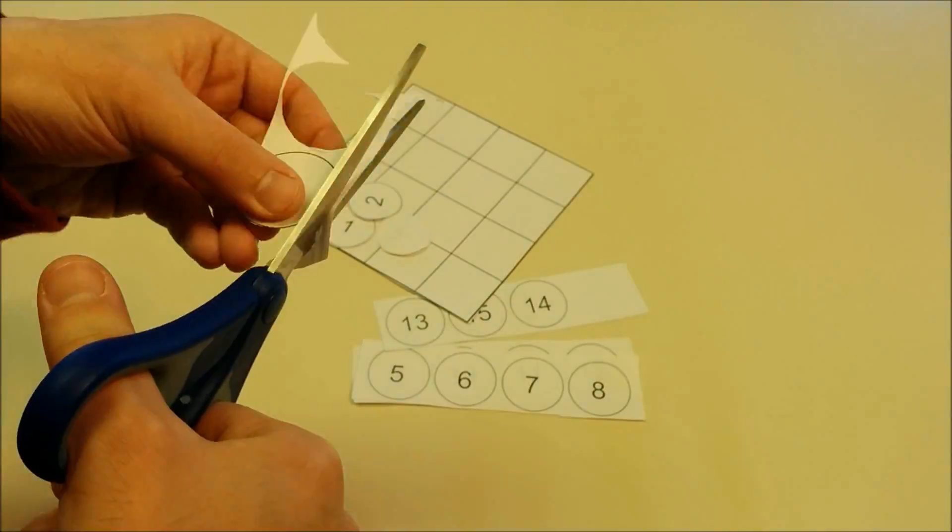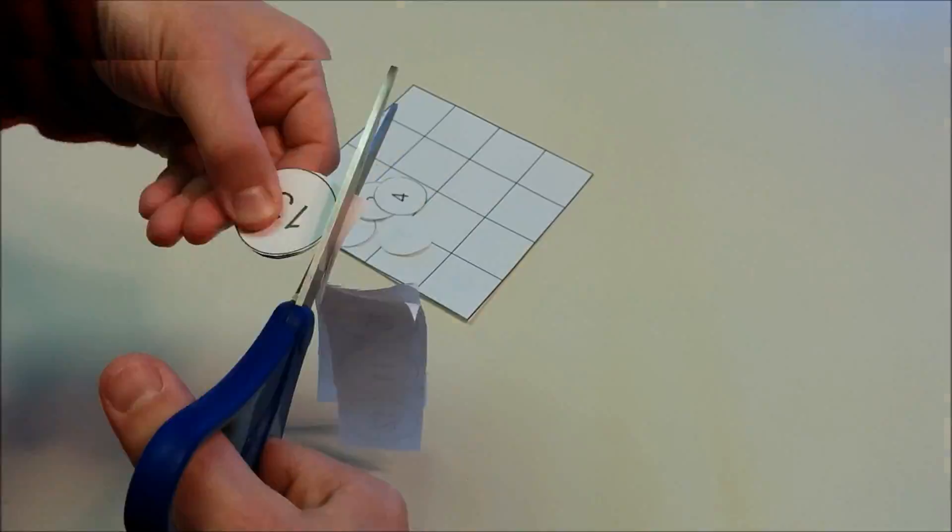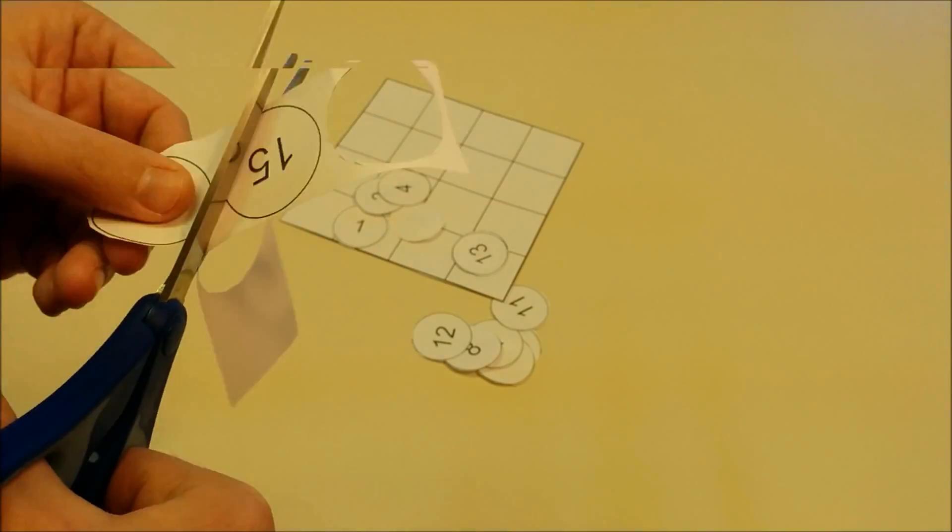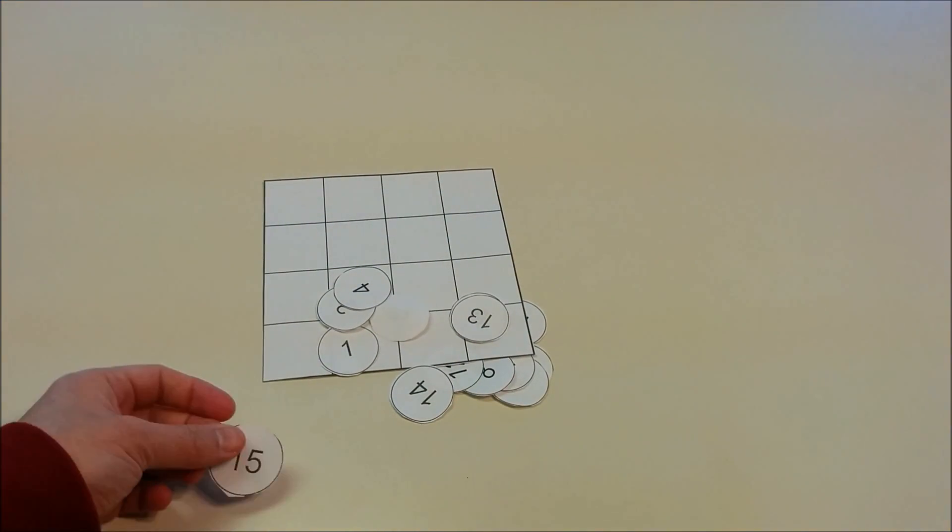So print those out and carefully cut out the disks with the numbers 1 through 15. You can cut them out one by one, or if you're more daring, you can stack them up.